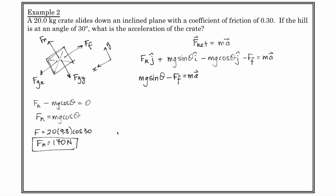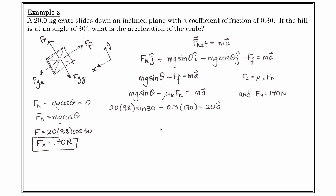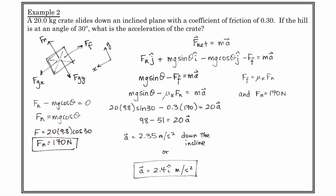The normal force works out to 170 N. Since friction = μ_k × F_N, we substitute: 20 × 9.8 × sin 30° − 0.3 × 170 = 20 × a. Solving algebraically gives acceleration = 2.35 m/s² down the incline, or approximately 2.4 î m/s².